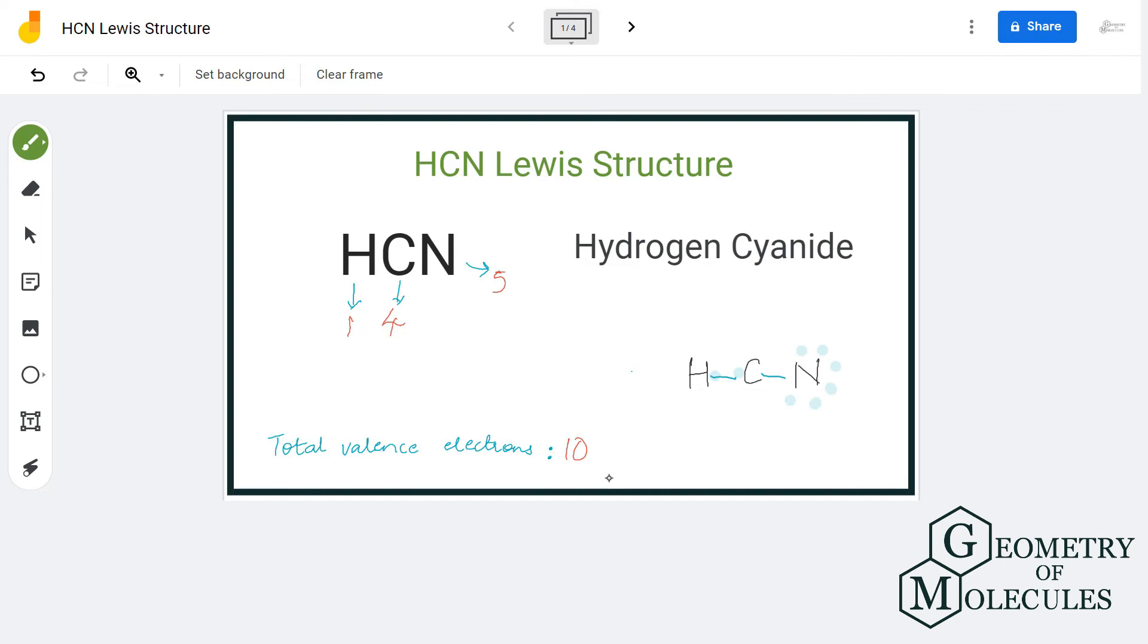So what we will do is we will shift these two electrons here and form one more bond between carbon and nitrogen like this.